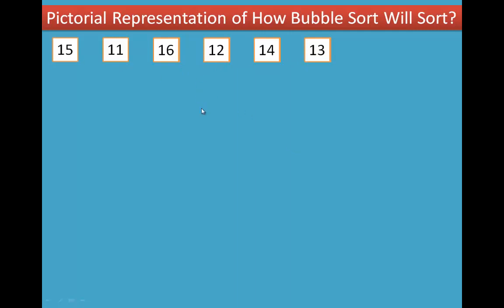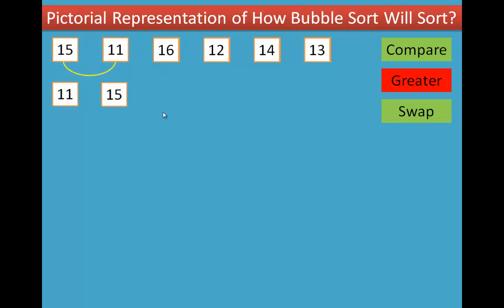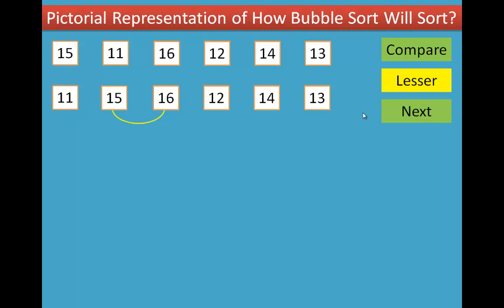Now, when we start sorting the numbers, we begin comparing. 15 and 11 are compared — since 15 is greater, we need to cover 15 and 16 next. Then we compare 15 and 16.